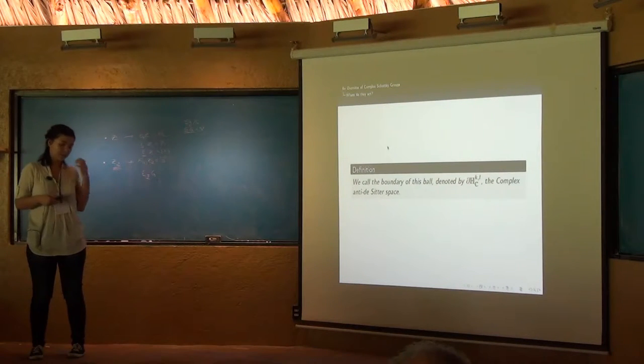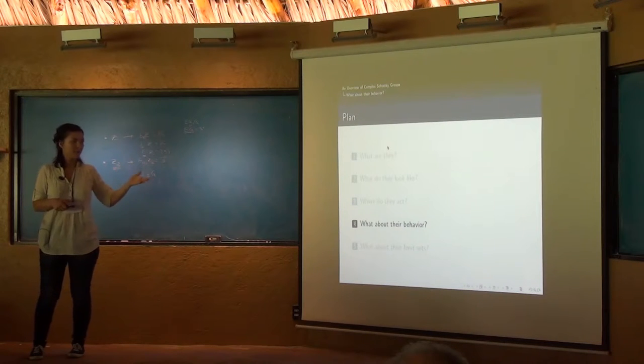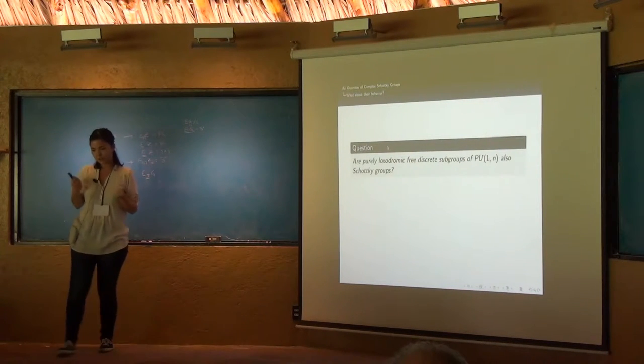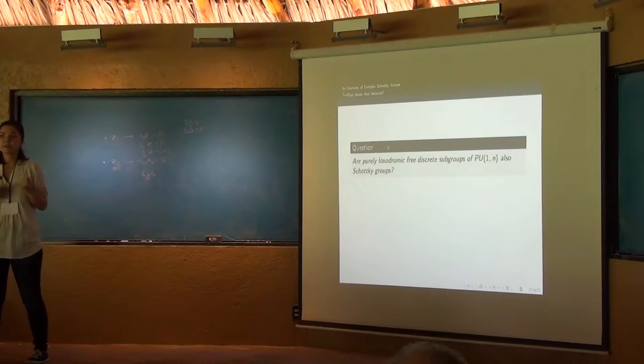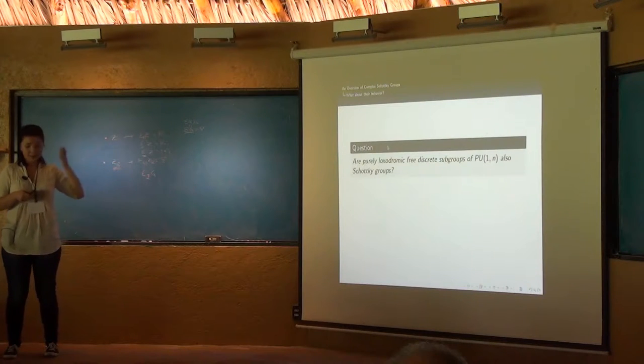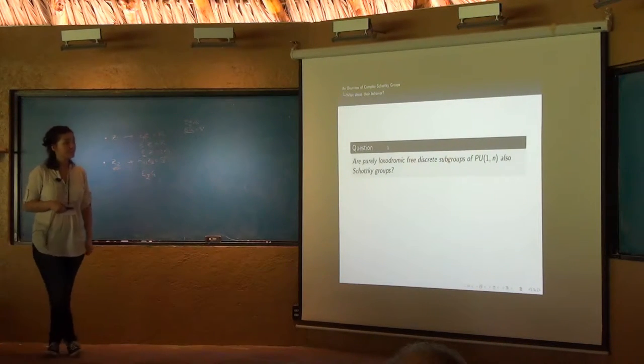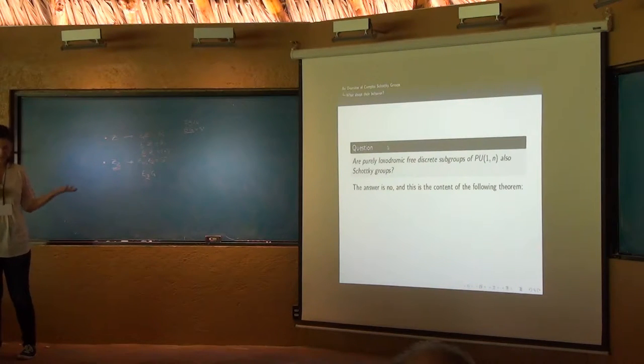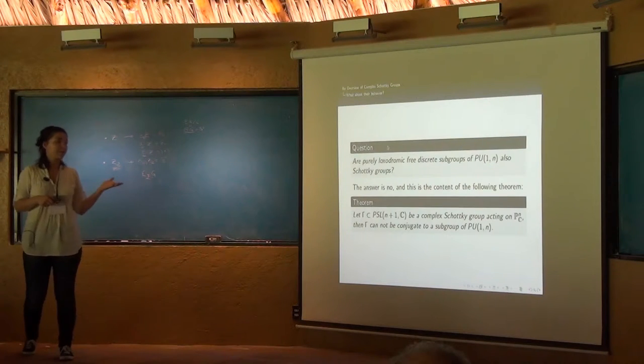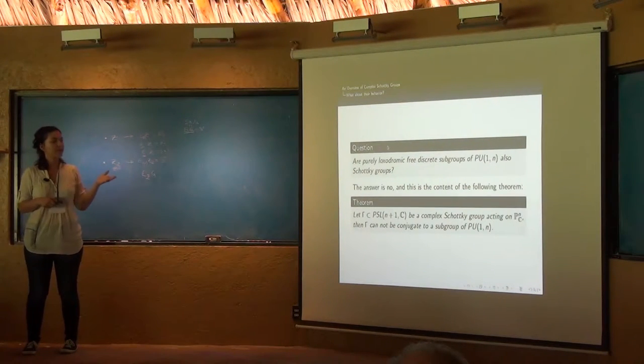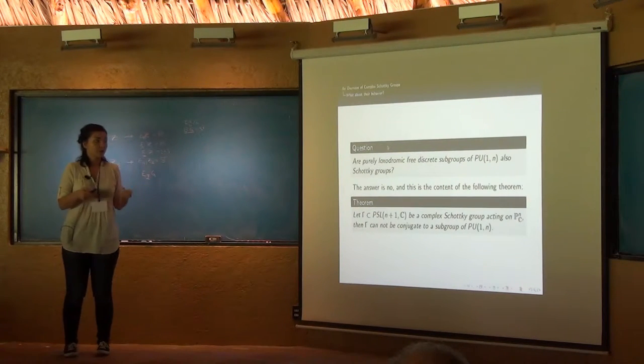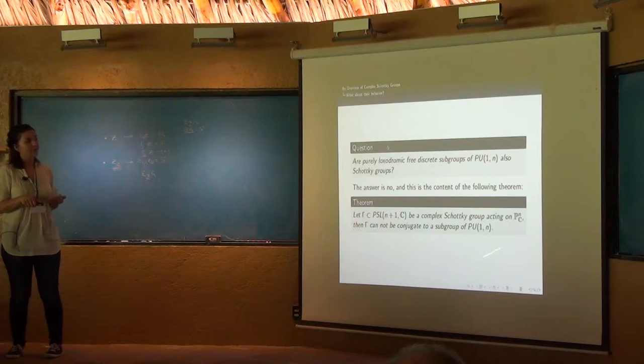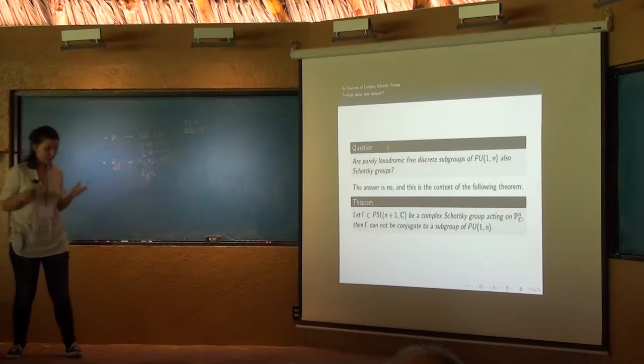So the first thing, what about their behavior? So we have a question. In the classical case, Schottky groups are hyperbolic, but here they are hyperbolic too. This is the question that we have. So the answer is not. And this is the content of the following theorem. This is one of the results that we have in this work. The theorem is that if you have one subgroup of PSL(n+1,C) acting as a Schottky group in the projective space, then gamma cannot be conjugated to a subgroup of PU(1,n). So they are not hyperbolic.